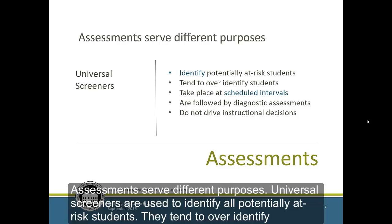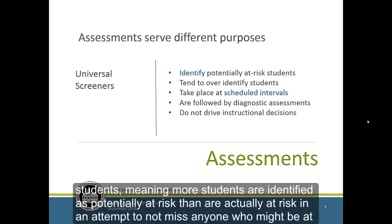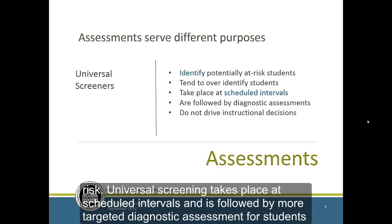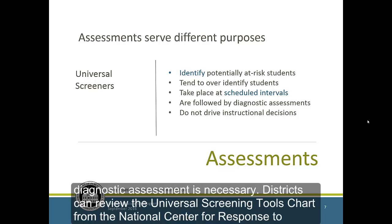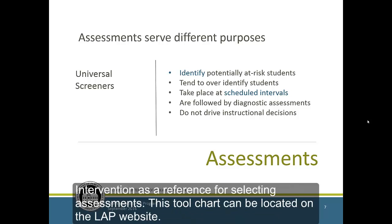Assessments serve different purposes. Universal screeners are used to identify all potentially at-risk students. They tend to over-identify students, meaning more students are identified as potentially at-risk than are actually at-risk, in an attempt to not miss anyone who might be at-risk. Universal screening takes place at scheduled intervals and is followed by more targeted diagnostic assessment for students potentially at-risk. Instructional decisions are not based on universal screeners — these screeners inform decision makers of whether or not a diagnostic assessment is necessary. Districts can review the Universal Screening Tools chart from the National Center for Response to Intervention as a reference for selecting assessments. This tool chart can be located on the LAP website.